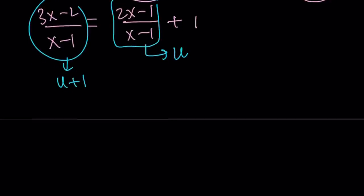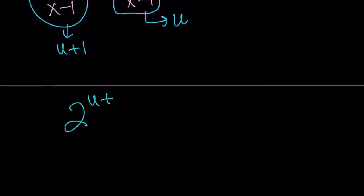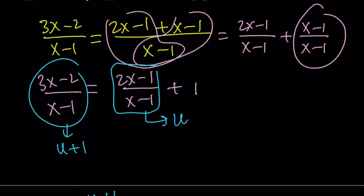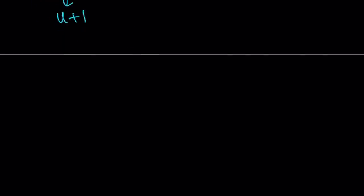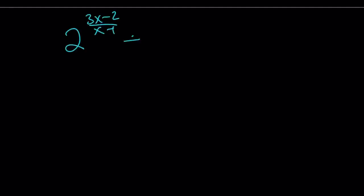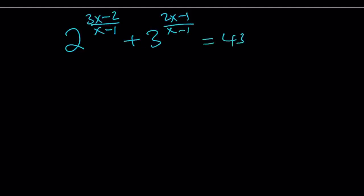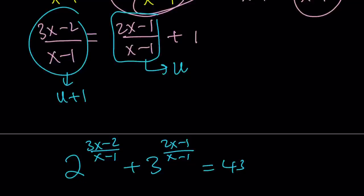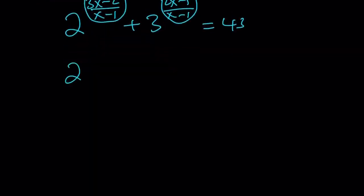So this gives us the following. Let me rewrite the original equation: 2 to the power of 3x minus 2 over x minus 1, plus 3 to the power of 2x minus 1 over x minus 1, equals 43. Based on our substitution, the first exponent is u plus 1 and the second exponent is u. So we have: 2 to the power of u plus 1, plus 3 to the power of u, equals 43.